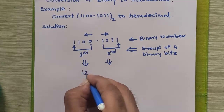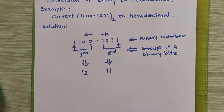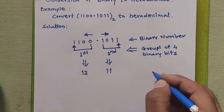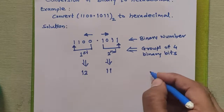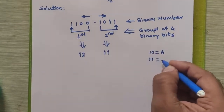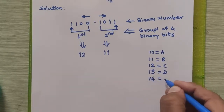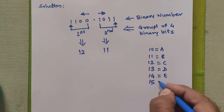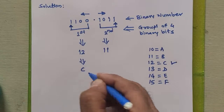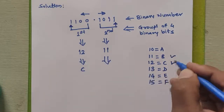1100 is 12 in decimal, and 1011 is 11 in decimal. In the hexadecimal number system, there are 16 valid symbols: digits 0 to 9, then 10 is represented by A, 11 is represented by B, 12 is represented by C, 13 is D, 14 is E, and 15 is F. So 12 is C and 11 is B. Therefore the hexadecimal equivalents for these groups are C and B.